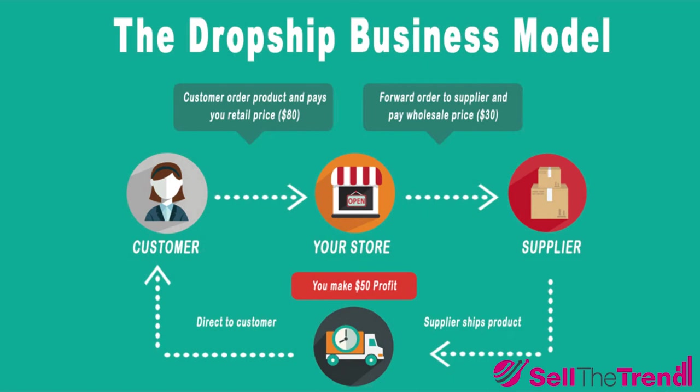Once you have received the money, which is automatically handled by the store software we're going to show you how to get up and running, you will then place an order with the supplier there on the right for the exact product the customer just bought. The great thing about this is that you will not be paying retail price for the product, but the much lower wholesale price from the supplier. In this example, that will be $30. The supplier will then ship the product directly to your customer without any more work on your part. You will then pocket the difference between the retail price, $80, and the wholesale price, $30, and you'll end up with $50 in profit.